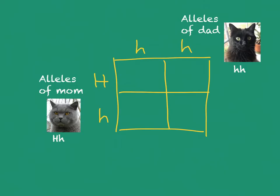Next, we work out how the kittens are going to look by filling in the boxes. For the first kitten, the mother passes on the allele for short hair and the dad passes on the allele for long hair. Same for the second kitten. For the one below, the mom passes on the allele for long hair and the dad passes on the allele for long hair. And for the last kitten, the mom passes on the allele for long hair and the dad passes on the allele for long hair.